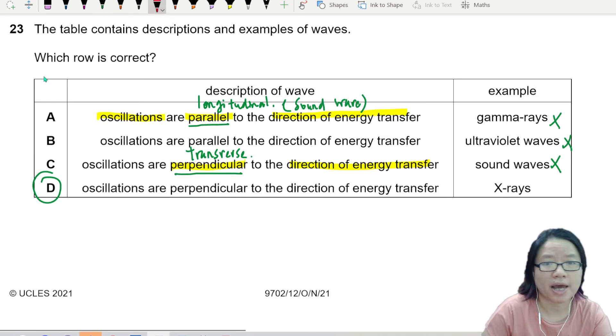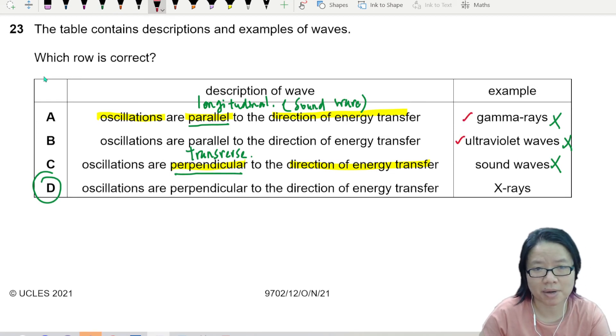X-ray. All these gamma ultraviolet X-rays, all these three are light. Light or EM waves. And electromagnetic waves are transverse waves.